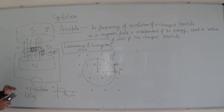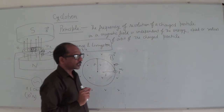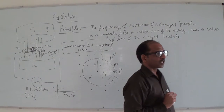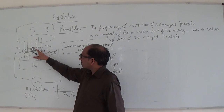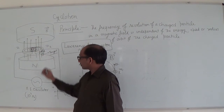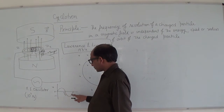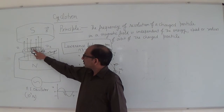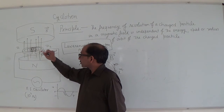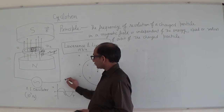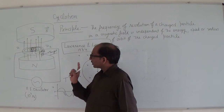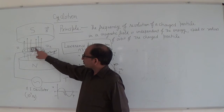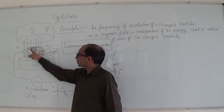To repeat this important point: the time taken by the ion in one D is T/2, and to complete the next semicircle in D2 is again T/2. So the total time taken by this ion to complete one revolution is T. From here, one can find out the frequency of the revolution.